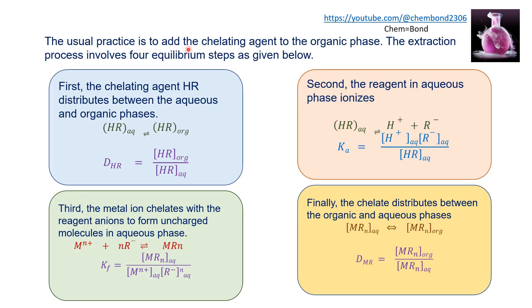The metal ion is extracted using a chelating agent dissolved in the organic phase. The extraction process involves four equilibrium steps.